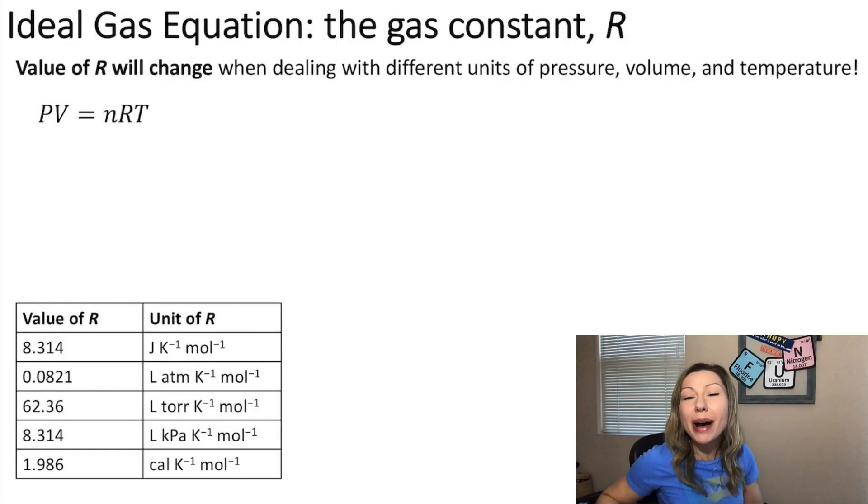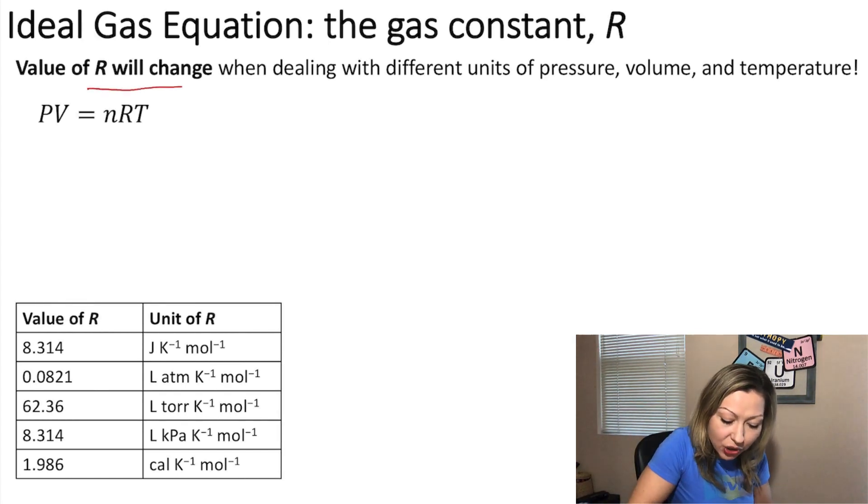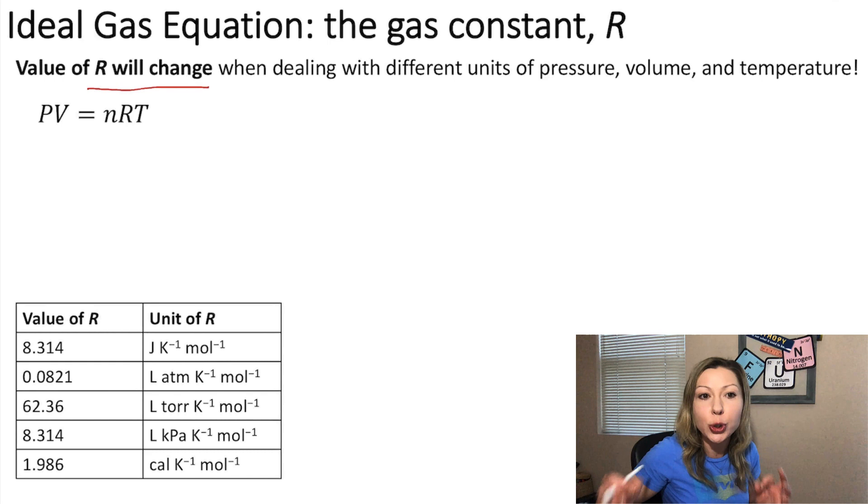Hello guys, let's talk more about the ideal gas equation and the gas constant R. It's a little bit tricky because the value of R will change when dealing with different units of pressure, volume, and temperature. Let me show you why.